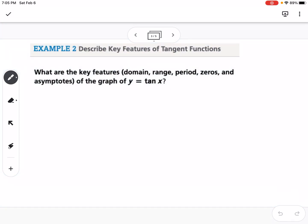So the next example says, what are the key features, the domain, the range, the period, the zeros, and the asymptotes of the graph of y equals tangent of x?